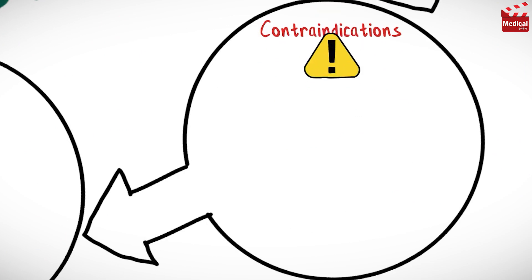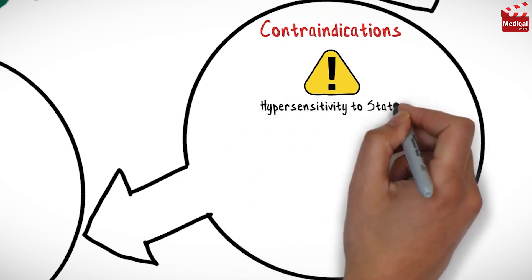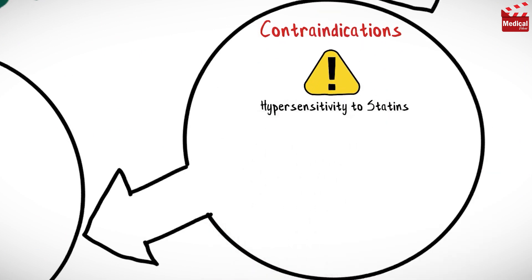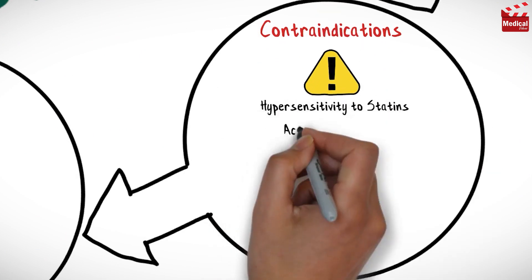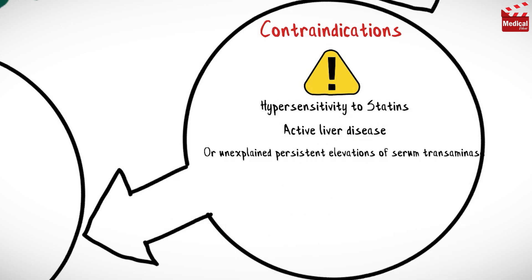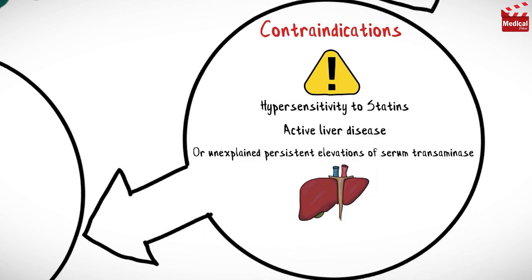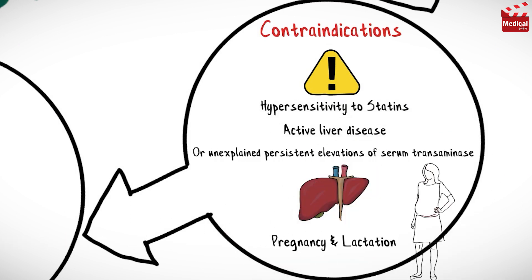Pravastatin is contraindicated in cases of hypersensitivity to statins, active liver disease, or unexplained persistent elevations of serum transaminase, pregnancy, and lactation.